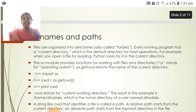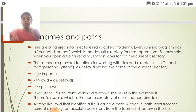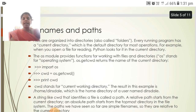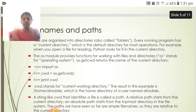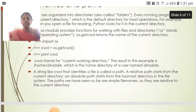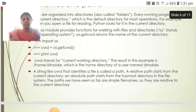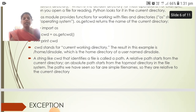File names and paths — files are organized into directories, also called folders. Every running program has a current directory, which is the default directory for most operations. For example, when you open a file for reading, Python looks for it in the current directory. The OS module provides functions for working with files and directories. CWD stands for current working directory. A string like CWD that identifies a file is called a path. A relative path starts from the current directory.